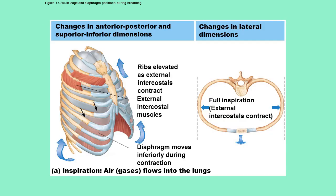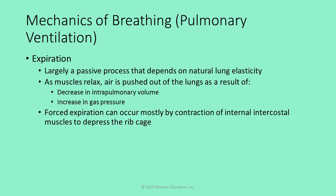This diagram shows how the thoracic cavity volume is increased when the diaphragm and the external intercostals contract, allowing movement of the ribs and the thoracic cage. When you exhale, or expiration, this is more of a passive process — the diaphragm and external intercostals relax, and the rib cage moves downward and inward.